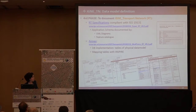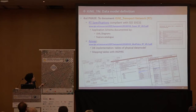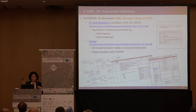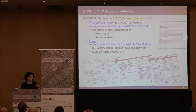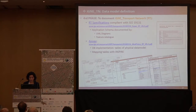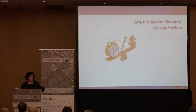All this information is available in these URLs. We have done the specification — the application schema is documented by UML diagrams and also with the feature catalogue. We have also added an annex where we provide information regarding the database implementation, because the conceptual model is one thing, but we can implement it in several ways. We already provide this kind of information with the mapping table with INSPIRE.